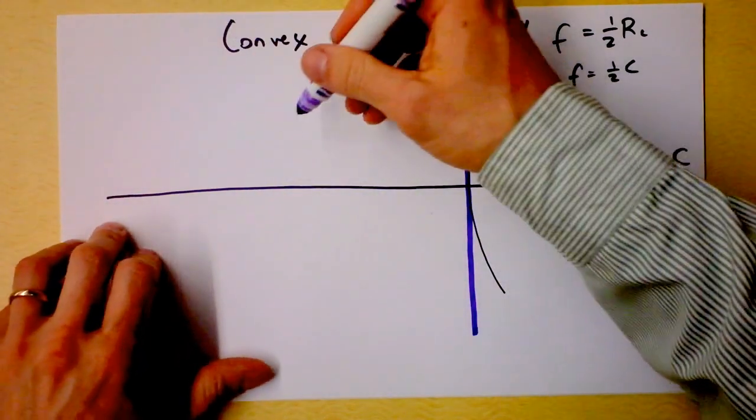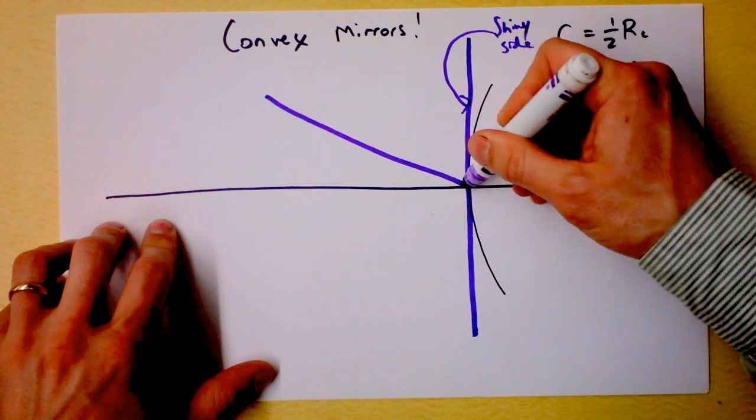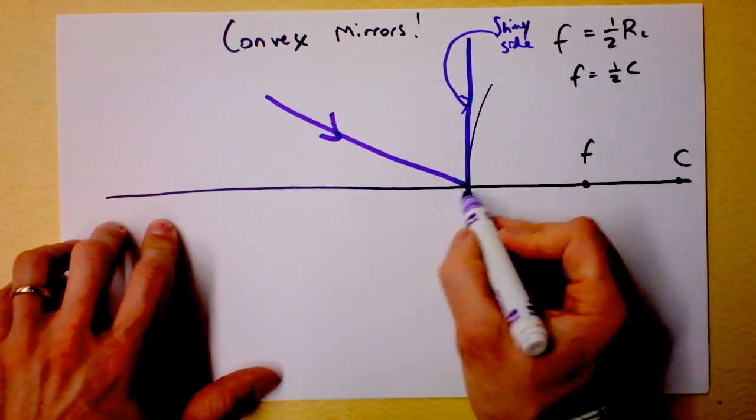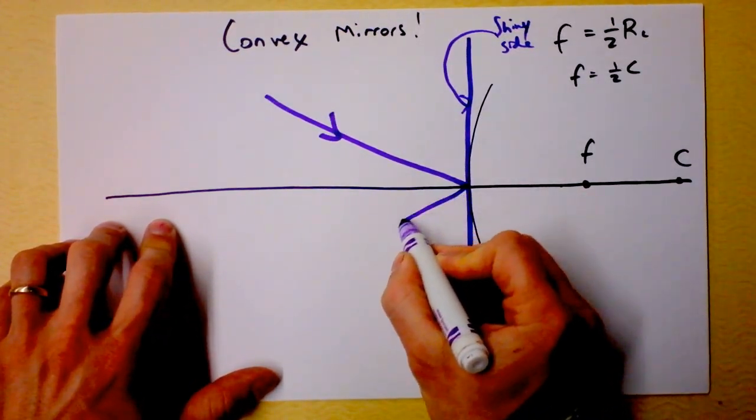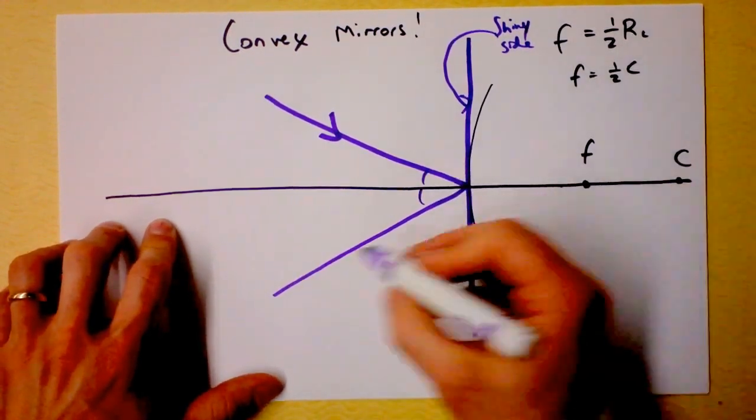First of all, we definitely agree that if a ray came in from here, it would leave from there, where this angle is the same as that angle.